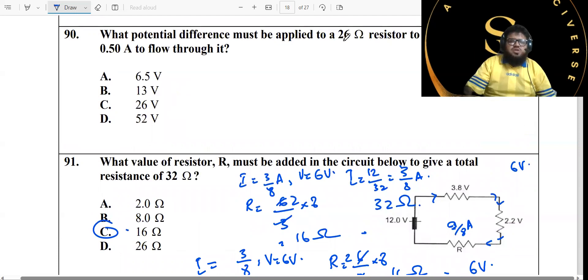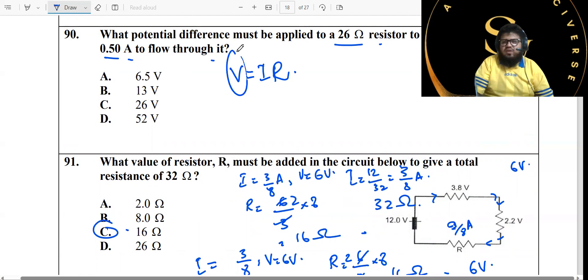Problem 90: What potential difference must be applied to a 26 ohm resistor to cause a current of 0.5 ampere to flow through it? All you need to do is calculate this. V equals IR is the formula. You need to calculate the voltage. You have the current, you have the resistance. Get the answer. You are good.